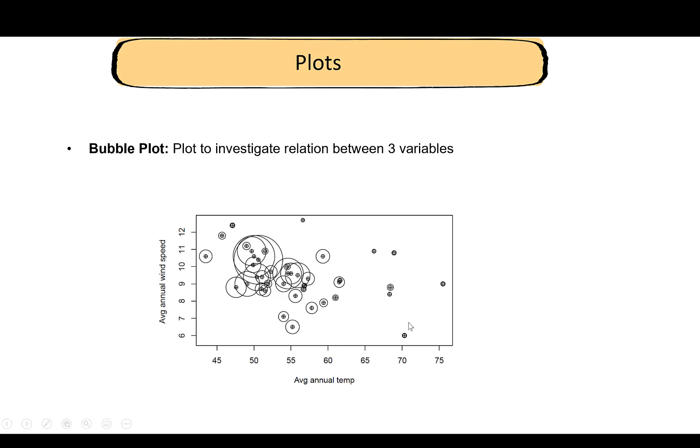You can see that at higher temperatures the circles are smaller. The area or diameter of the circles is small, so this indicates there's lesser pollution or lesser SO2 levels at higher temperatures. As you lower the temperature, as you go left on the x-axis, the size of the bubbles increases.